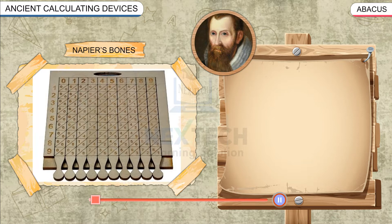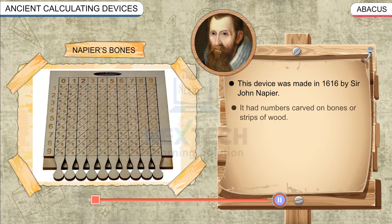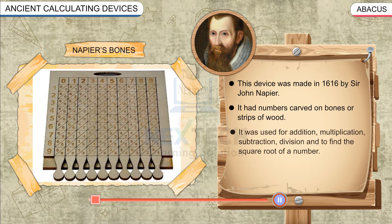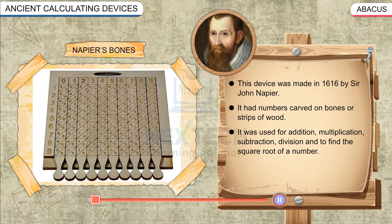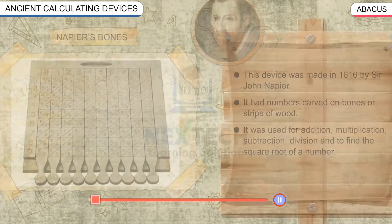Napier's Bones: This device was made in 1616 by Sir John Napier. It had numbers carved on bones or strips of wood. It was used for addition, multiplication, subtraction, division, and to find the square root of a number.